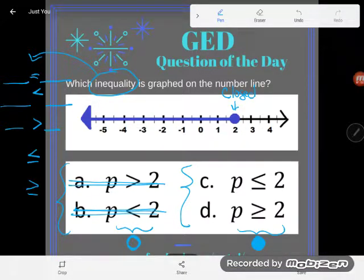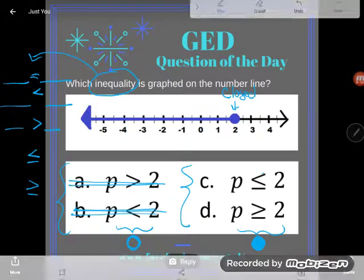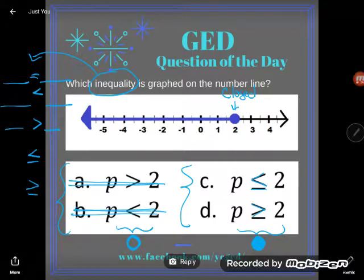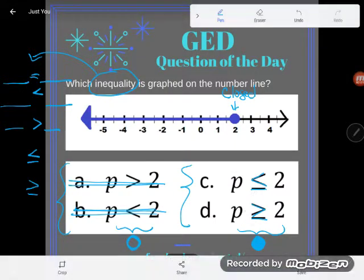So this says p is less than or equal to 2, meaning that p could be anything smaller than 2. This one says p is greater than or equal to 2, meaning that p could be anything larger than 2. Take a look at where the blue line is on my graph.